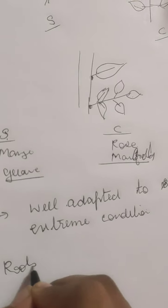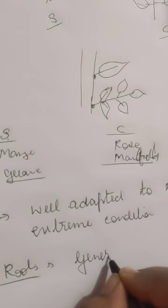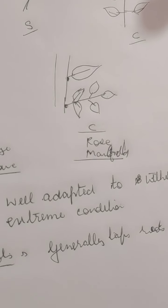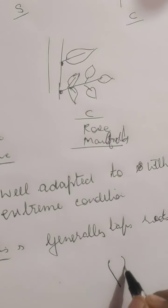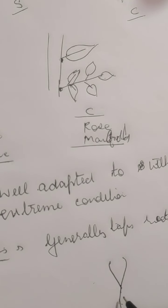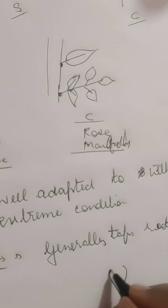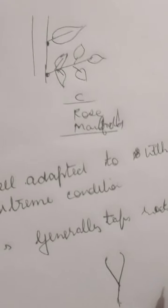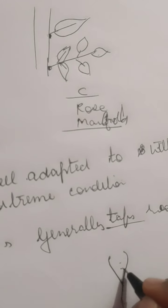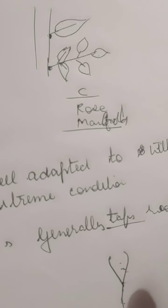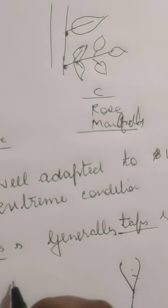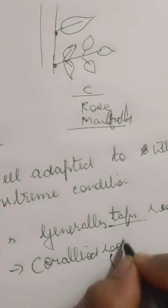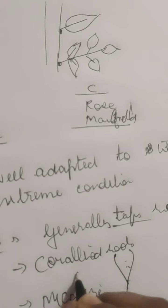Now, roots in gymnosperms. Gymnosperms generally have tap roots. Tap roots are large, tapering, and grow downwards into the soil. These kinds of roots are quite difficult to uproot and transplant because they grow deep into the soil. Examples of tap roots are carrot and radish. Generally they are taproots, but they can also have coralloid roots or mycorrhiza.